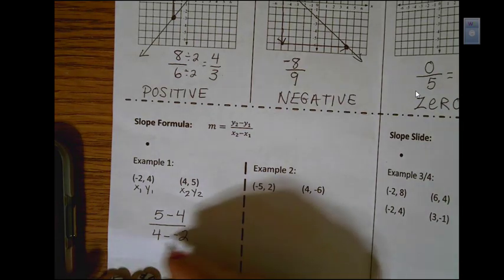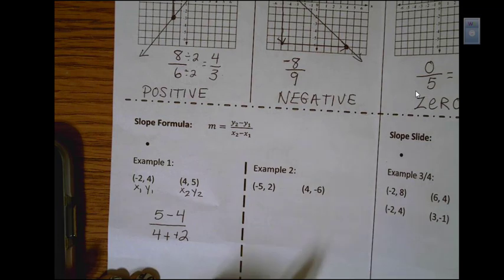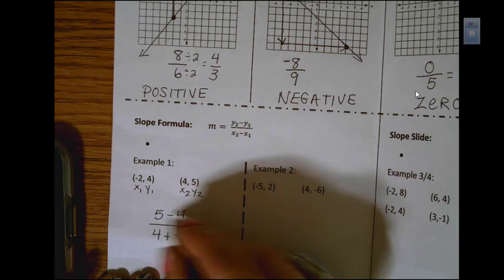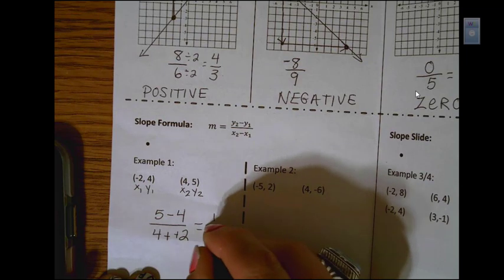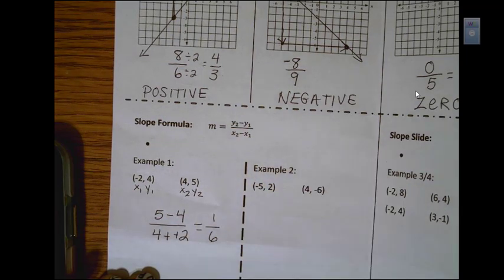Now when you minus a negative, remember that becomes plus plus. And now I just solve the numerator. 5 minus 4 is 1. 4 plus 2 is 6. So the slope would be 1 sixth.